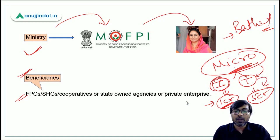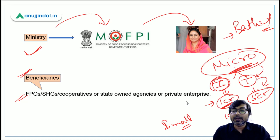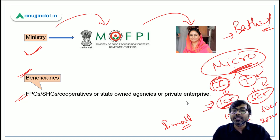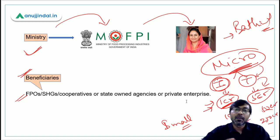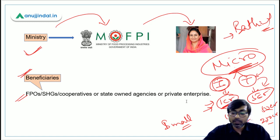For reference, the MSME thresholds are: for micro enterprises, investment up to ₹1 crore and turnover up to ₹5 crore; for small, ₹10 crore and ₹50 crore; and for medium, ₹50 crore and ₹250 crore. An easy way to remember: 1, 5 — 10, 50 — 50, 250 for micro, small, and medium respectively.